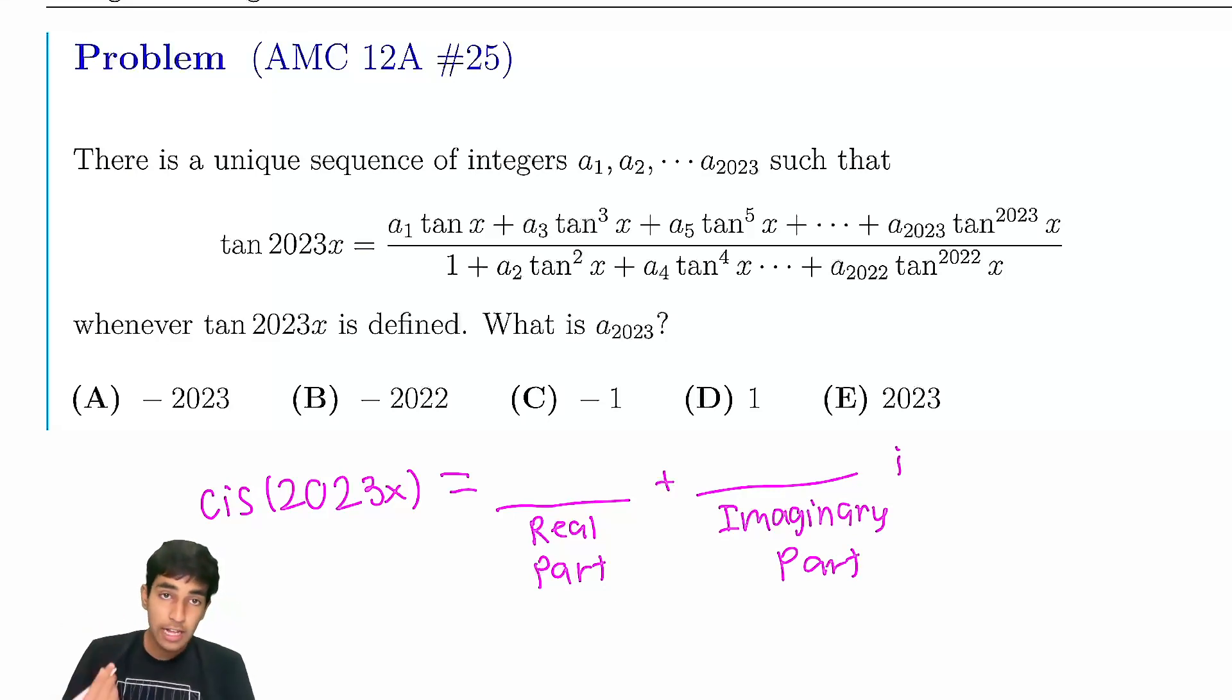So the trick for this is, the tangent is just the ratio of the imaginary part to the real part. Because this thing is cis of 2023x, it's just cosine 2023x plus i sine 2023x. So it's just this over this, which is imaginary part over the real part.